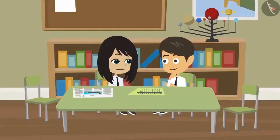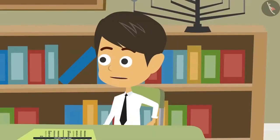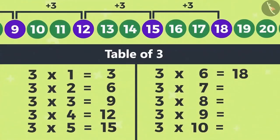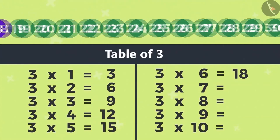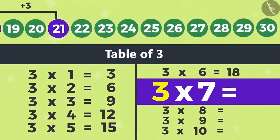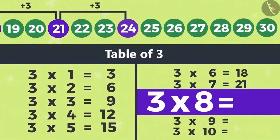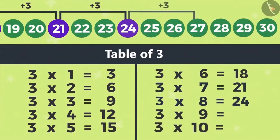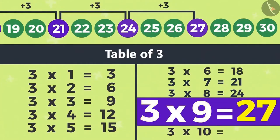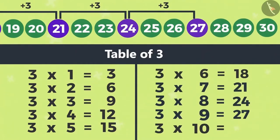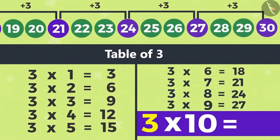The multiplication of 3 is not complete. We can complete that. The third number after 18 will be 21, that is 3×7 is 21. 24 will be three numbers after 21, that is 3×8 is 24. The third number after 24 is 27, that is 3×9 is 27. And the third number after 27 will be 30, that is 3×10 is 30.